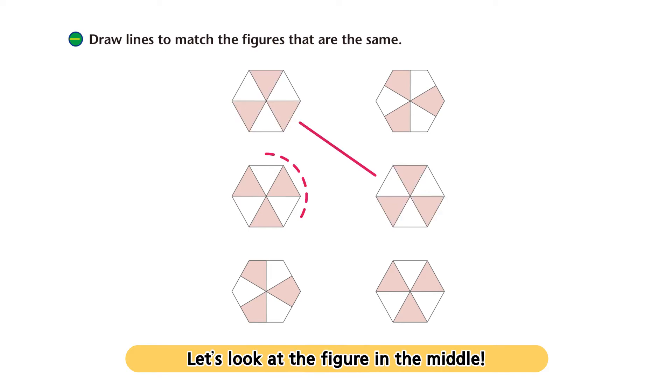Let's look at the figure in the middle. The shaded parts are triangle shapes. Find the figure with the same shape on the right and draw a line.